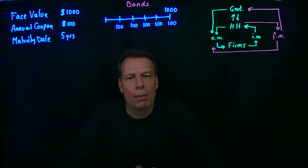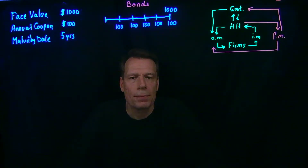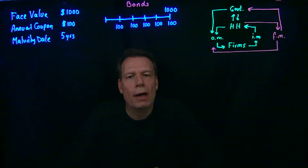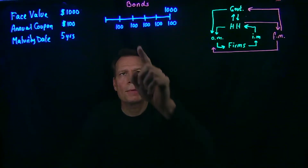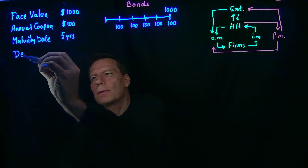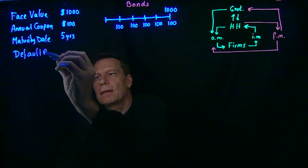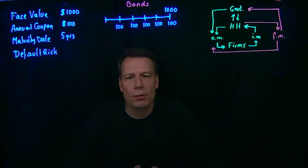So this bond is simply a promise of future payments. And the question is, how much would you be willing to pay for such a bond — for the promise of these future payments? Well, there are several things you might worry about. The first thing is, how good is the promise from whoever is issuing the bond? Will whoever is issuing the bond still be around five years from now to make these payments? What you're worried about is what we call the default risk of the bond — the risk that whoever made the promise is going to default on that promise.